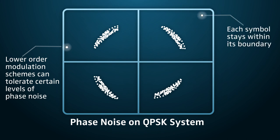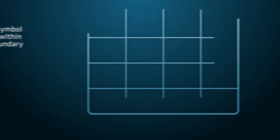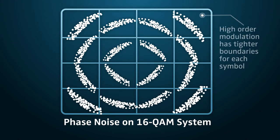Higher orders of modulation, like 16 QAM, have tighter boundaries for each symbol.